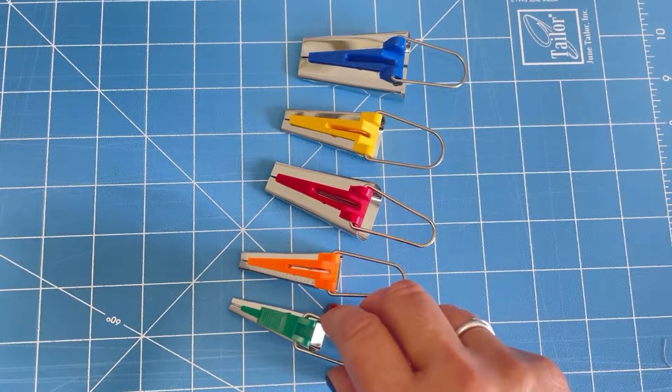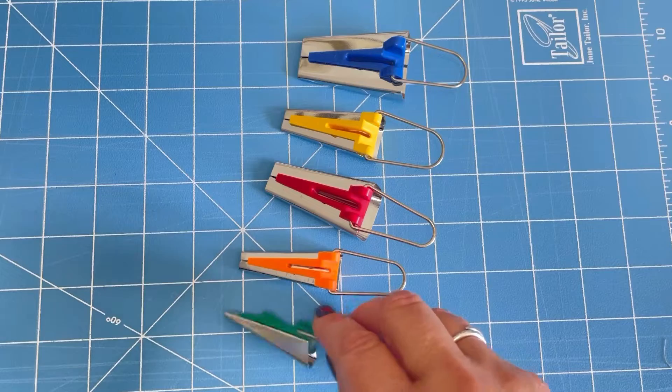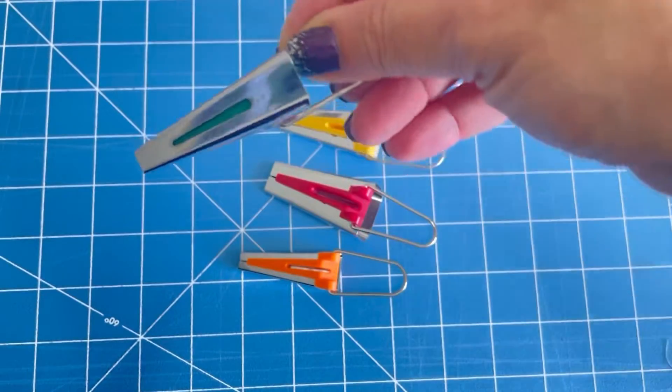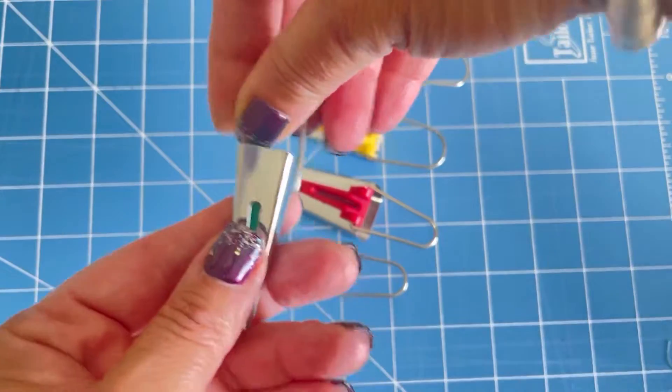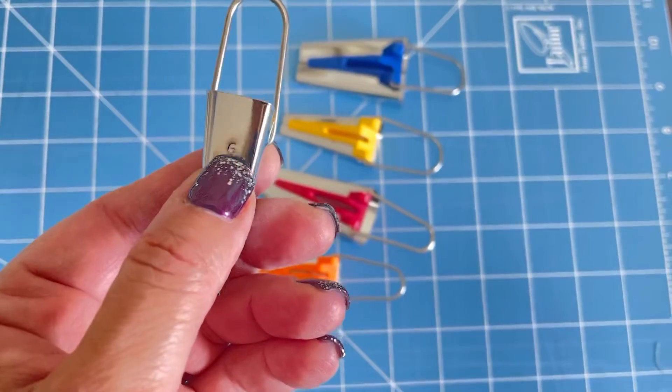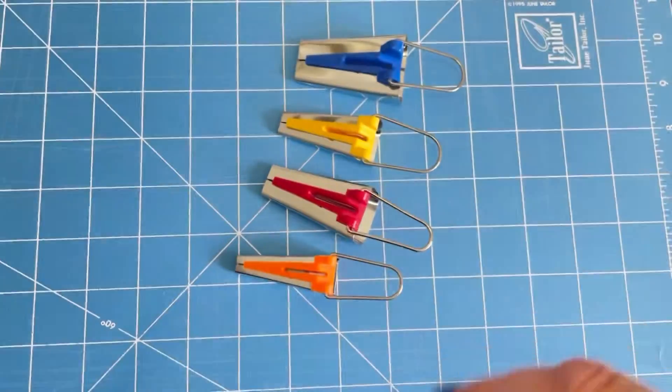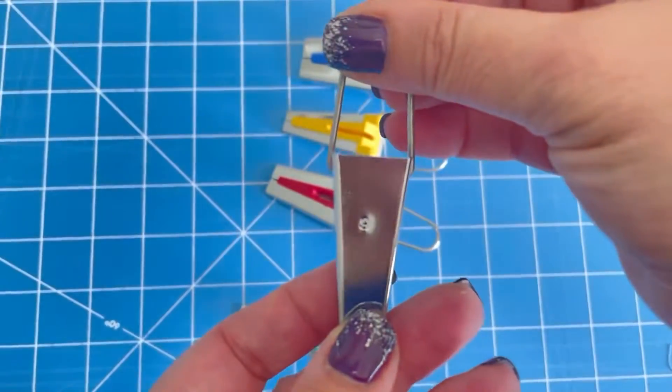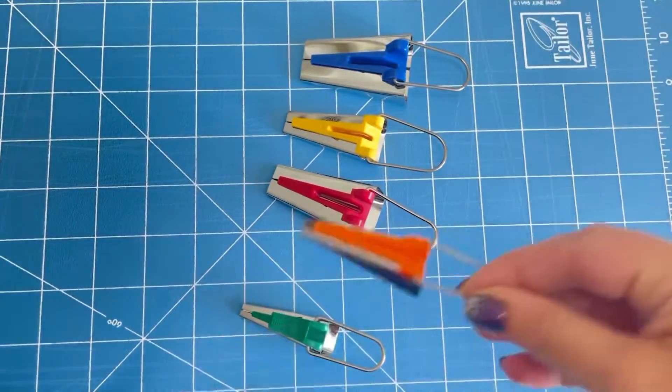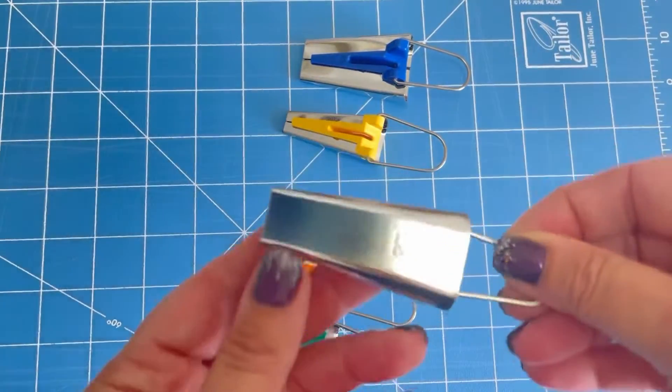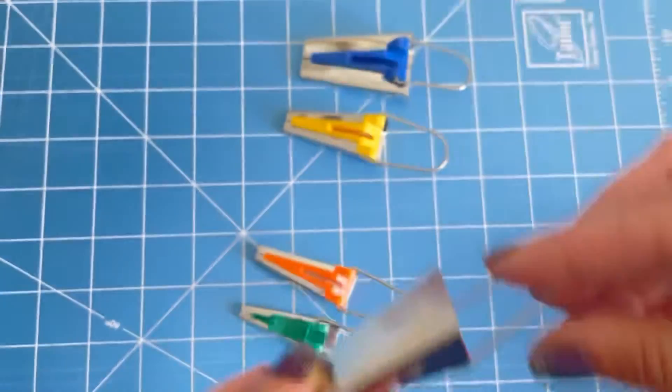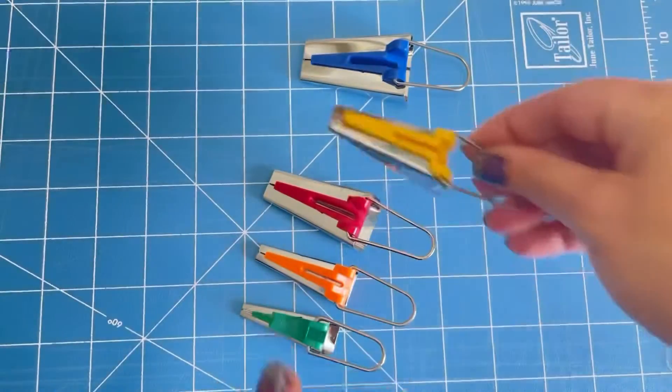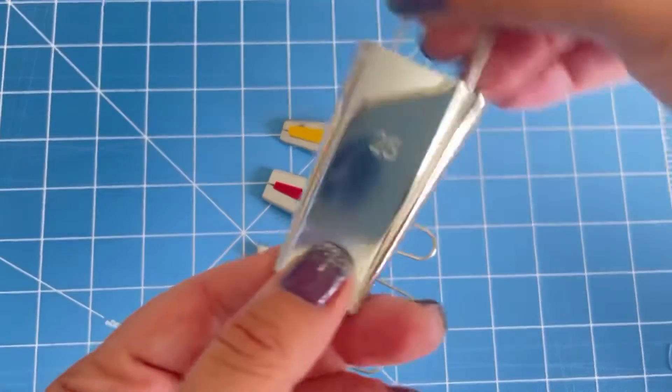So one of the very first things I always wondered about these was if you turn them over, they've got a number. They've always got a number on. So that one says six. This one, confusingly, nine. This one, 18, 12 and 25.